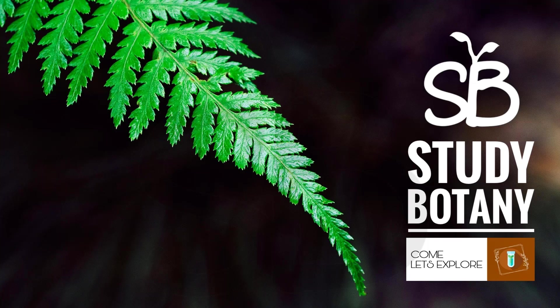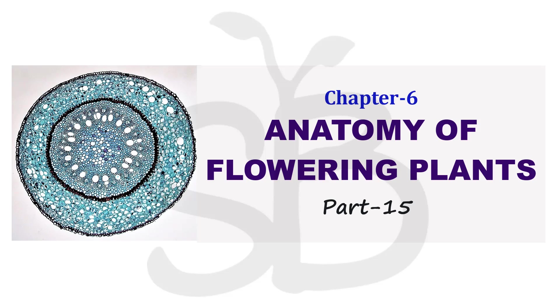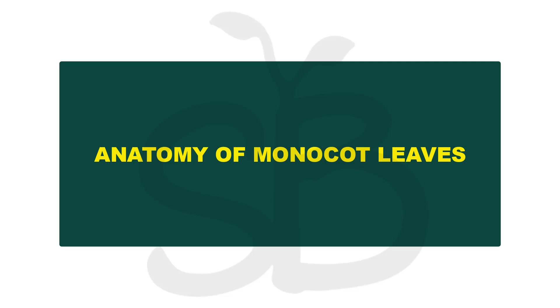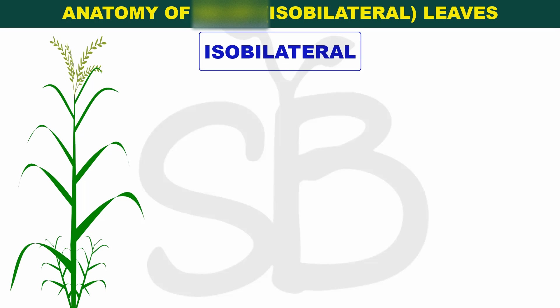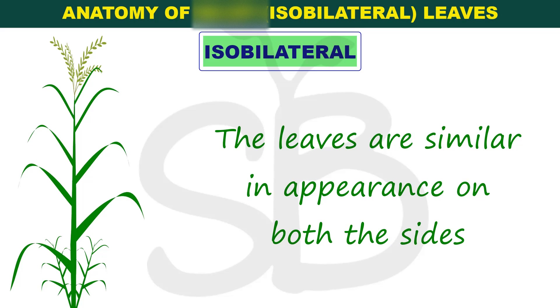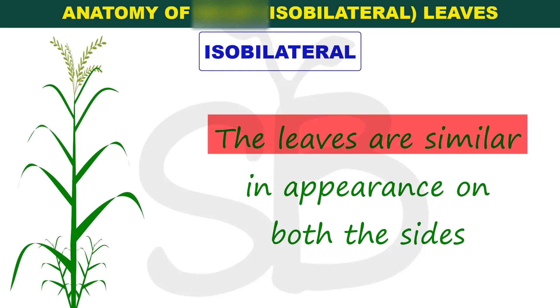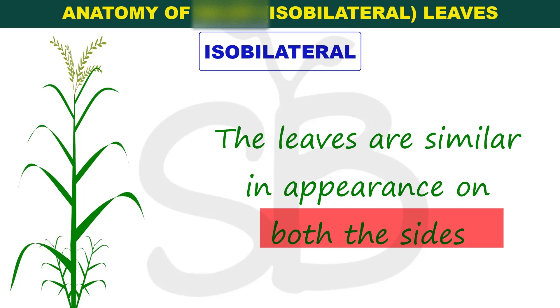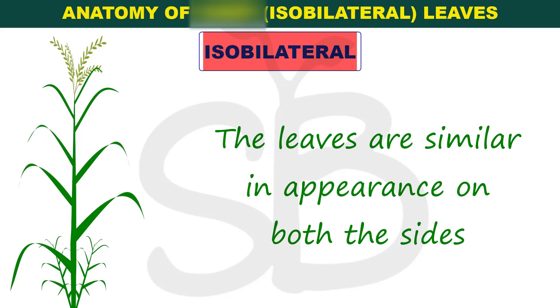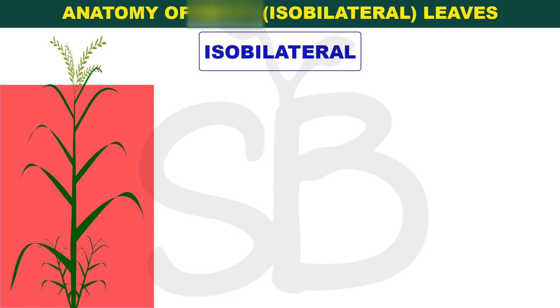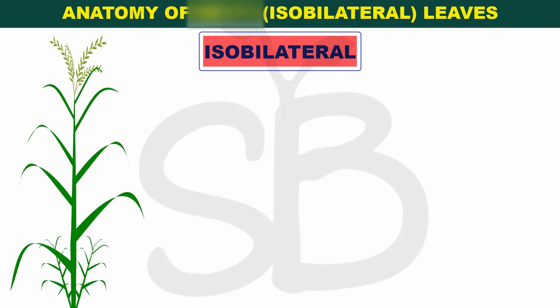Hello friends, welcome back to my channel StudyBot. We are going to discuss Plus One Biology Chapter 6: Anatomy of Flowering Plants, Part 15. Our discussion topic is the anatomy of the monocot leaf. The common name of the monocot leaf is isobilateral leaf. Iso meaning same — the leaves are similar in appearance on both sides and are known as isobilateral type of leaves.